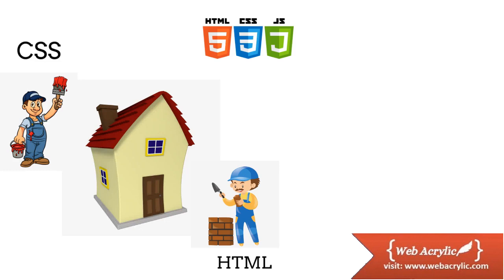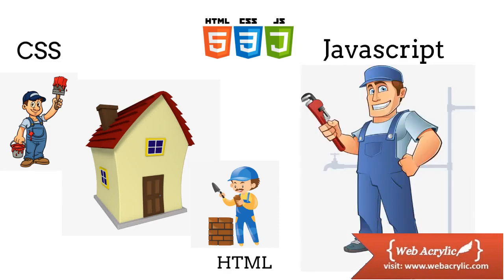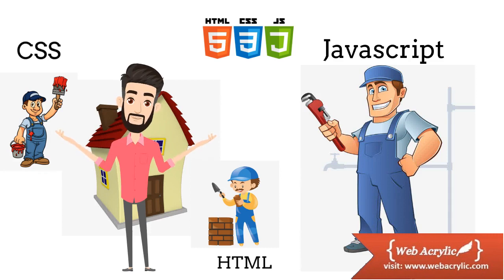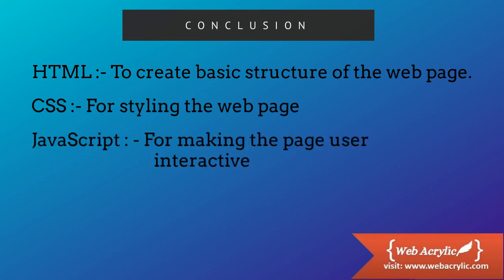Now we have a house, but there are some other important things to add — a plumber and an electrician. These two are represented by JavaScript. If we talk about a button or any interactive element, we need JavaScript to create front-end interactivity and make the website more interactive.